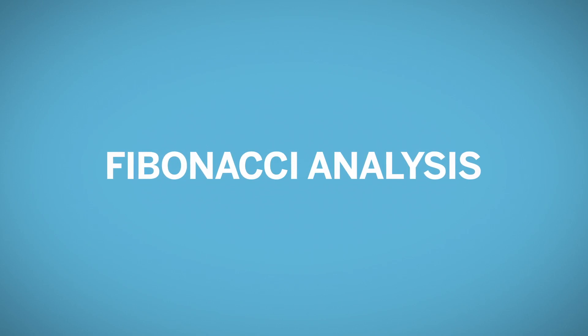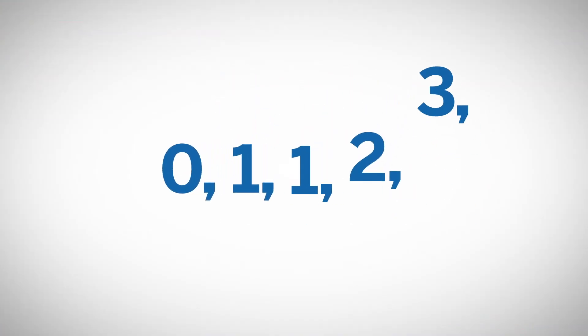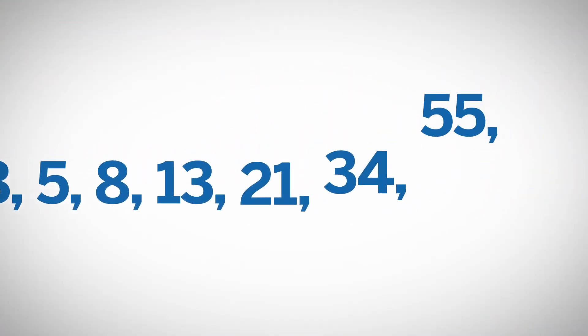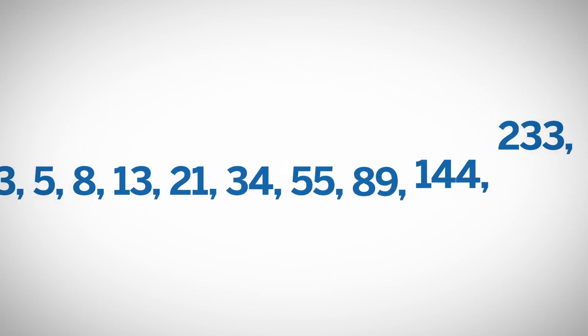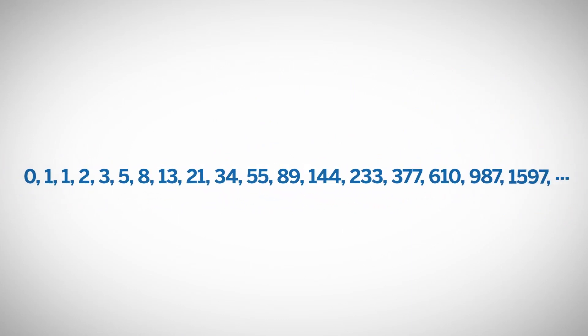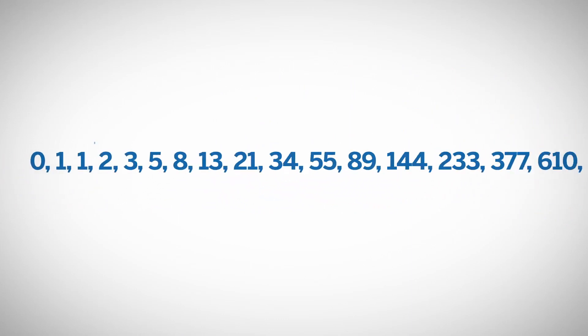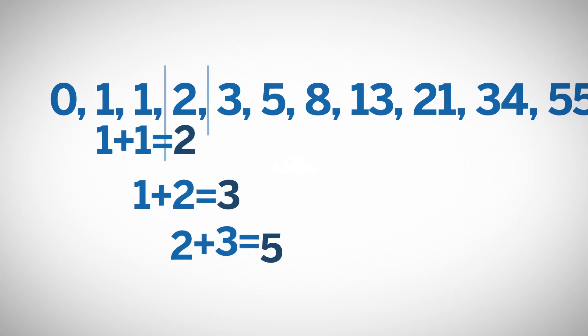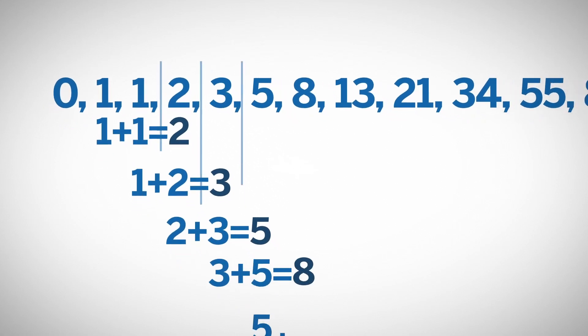Fibonacci is a series of numbers. It begins as 1, 1, 2, 3, 5, 8, 13, etc., and is formed using the sum of the preceding two numbers in a series to find the next number.